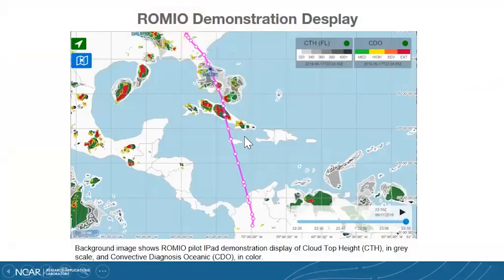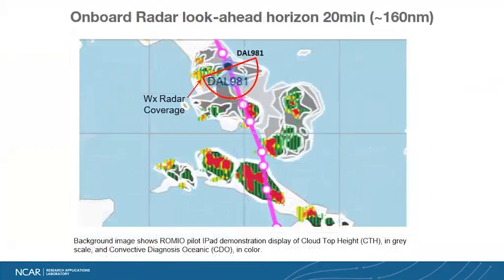Let's dive into what is Global Weather Notification. Here again, we're going to tie this back to the Romeo demonstration display. So if you're a pilot and you have this in the cockpit, you're going to be able to see the whole picture of where you're flying, the convective weather ahead of you or around, where you can deviate if you need to. But if you're flying without Romeo or without much weather in the cockpit, you're going to be really limited to your onboard radar — most likely 20-minute ahead coverage.